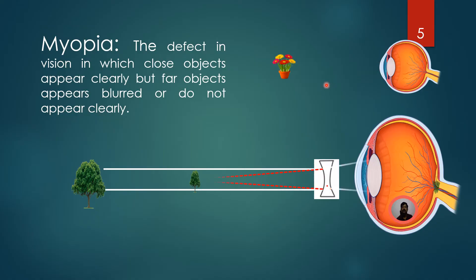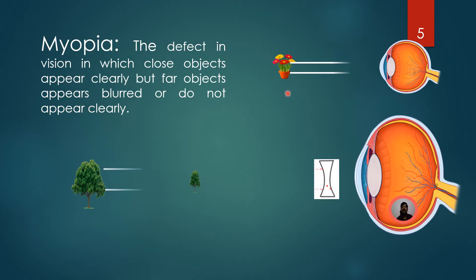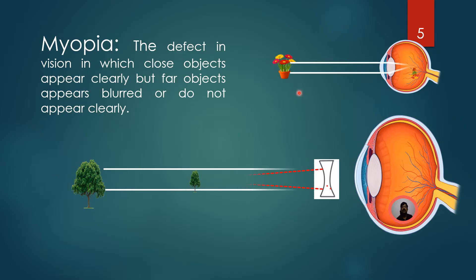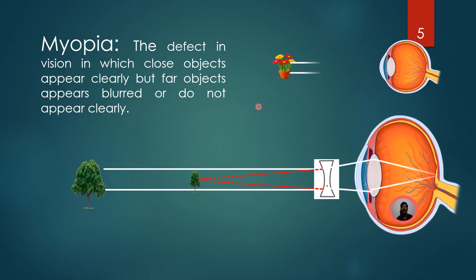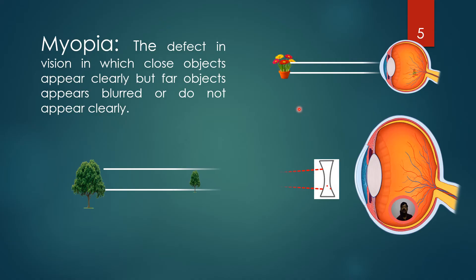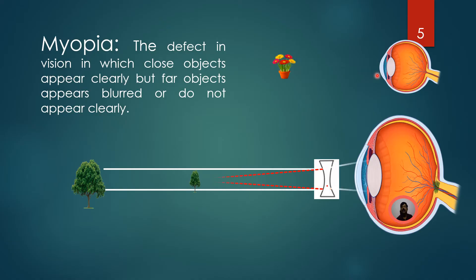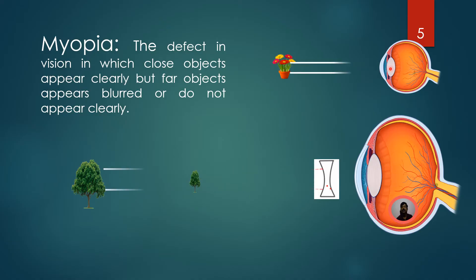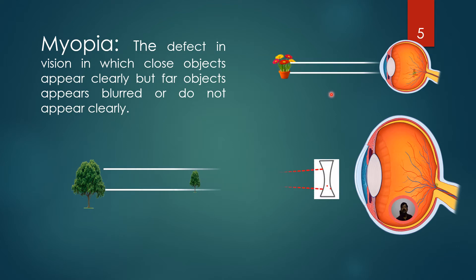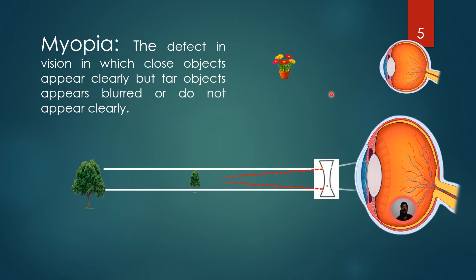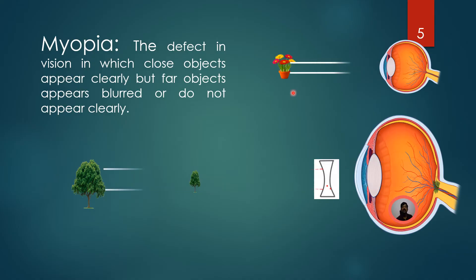For example, in the case of students, they can read the textbook and see the letters clearly, but feel that letters on the blackboard appear blurred. The main reason for myopia is high converging power of the eye lens. The second reason is an elongated eyeball. When the eyeball is elongated, the final image is formed in front of the retina instead of on the retina.